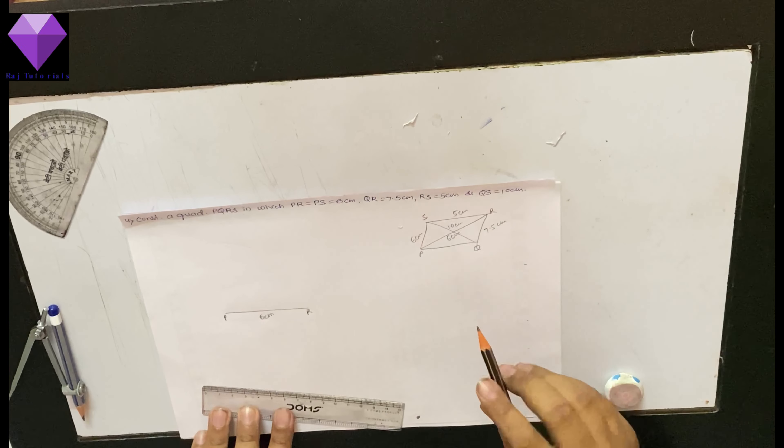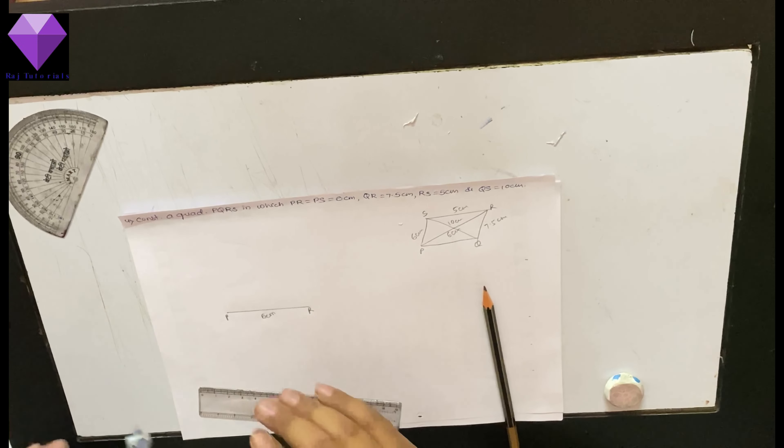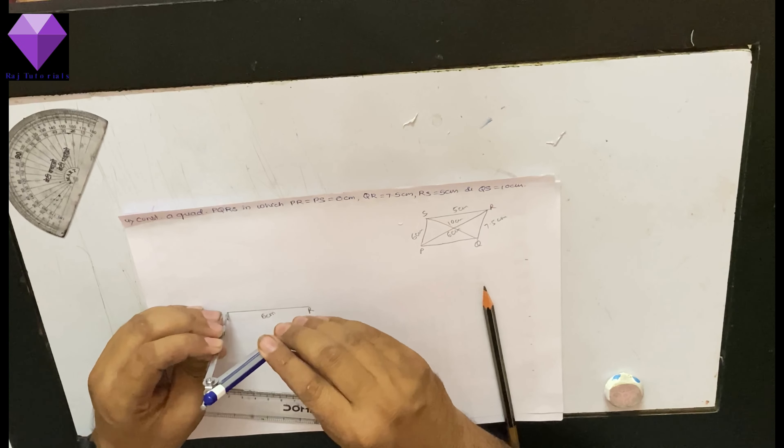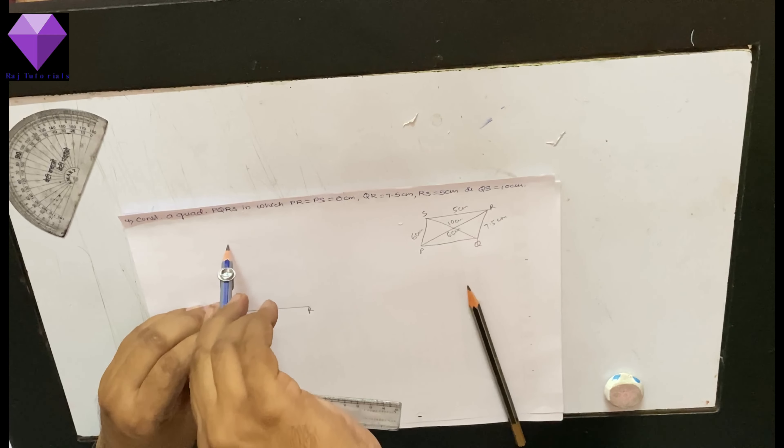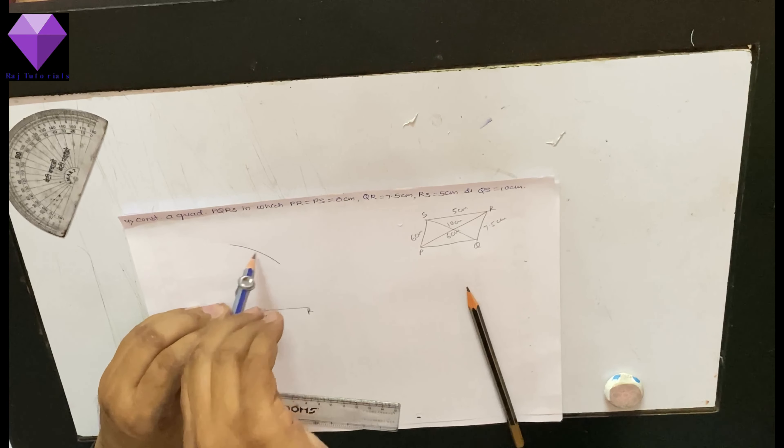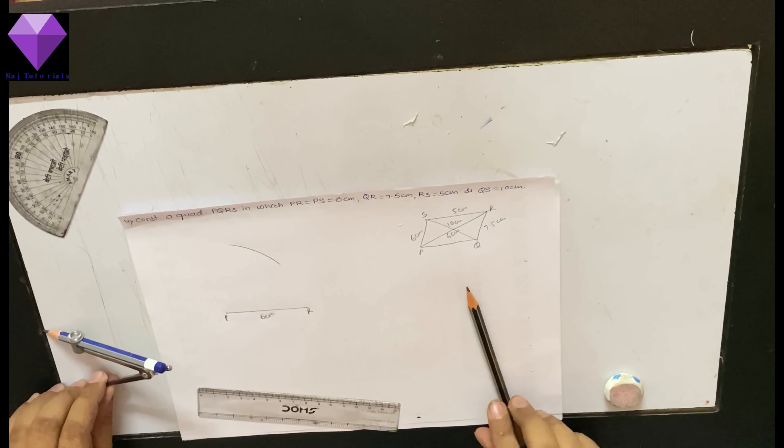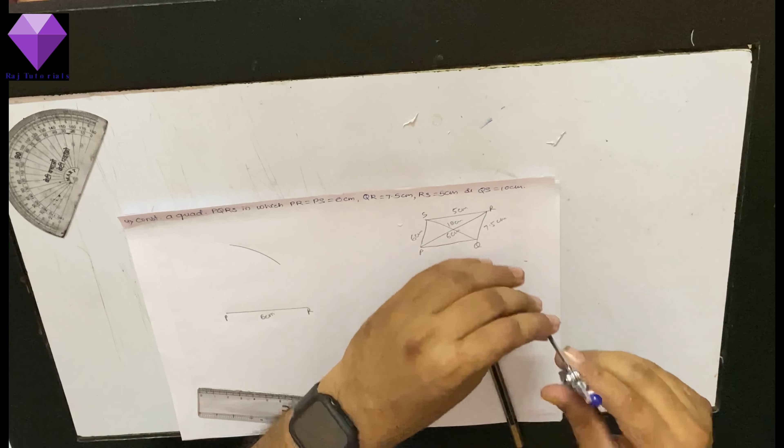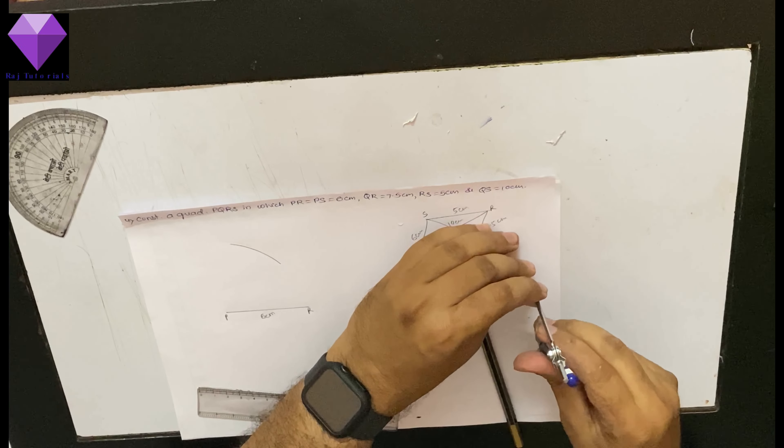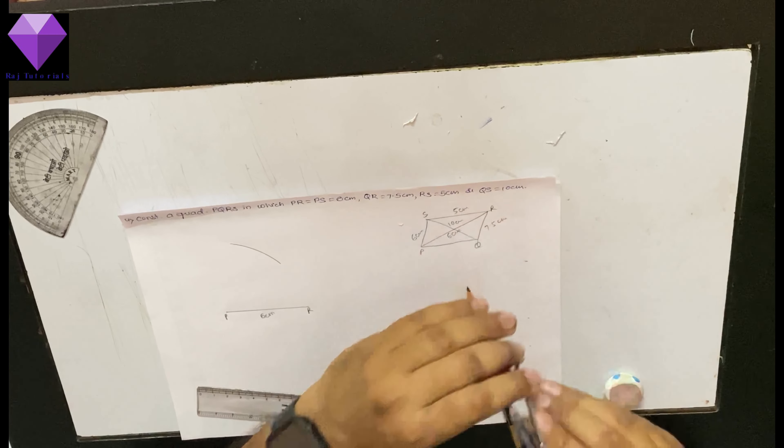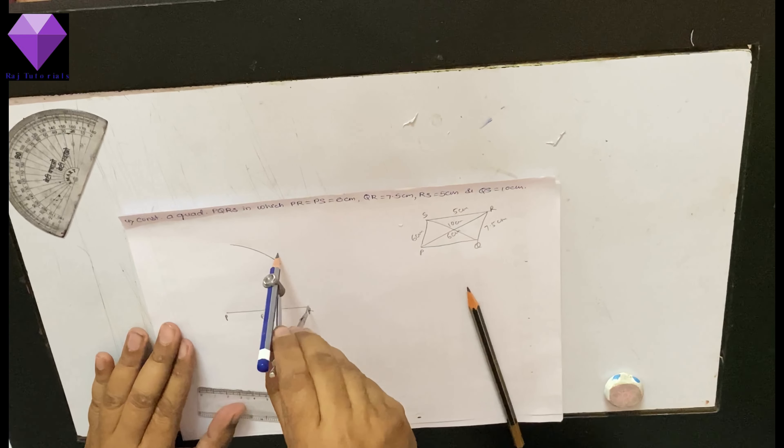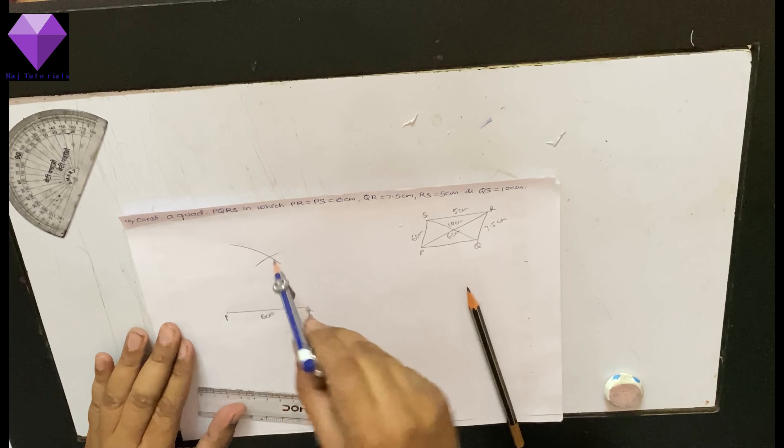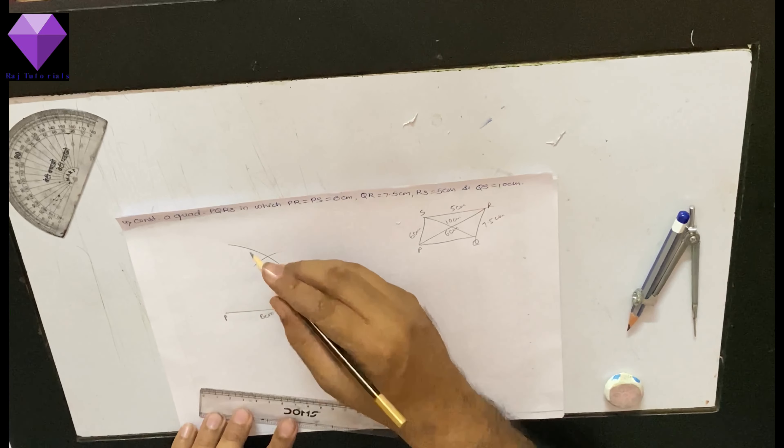Now, PS I have to draw 6 cm. So, I am taking in my compass 6 cm and marking a first arc to get S point. Now, RS is 5 cm. So, I will measure in my compass 5 cm and with R center, I am marking point S. So, this is my point S.